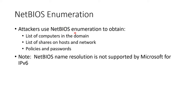We can use NetBIOS to get lists of computers, lists of shares, policies, passwords, users, and groups. Microsoft does not support NetBIOS for IPv6, mainly because NetBIOS is broadcast-based and IPv6 has no concept of broadcasting — everything is multicast — and Microsoft did not adopt it to work on IPv6.